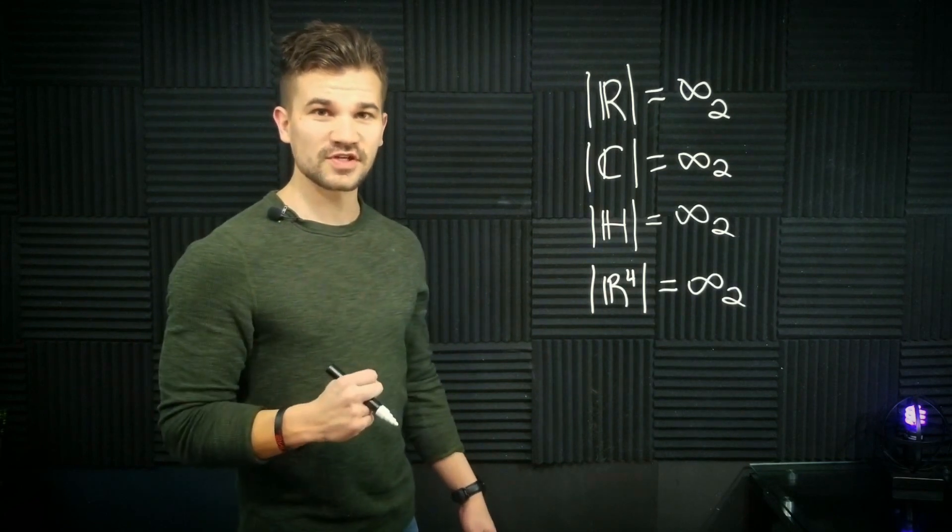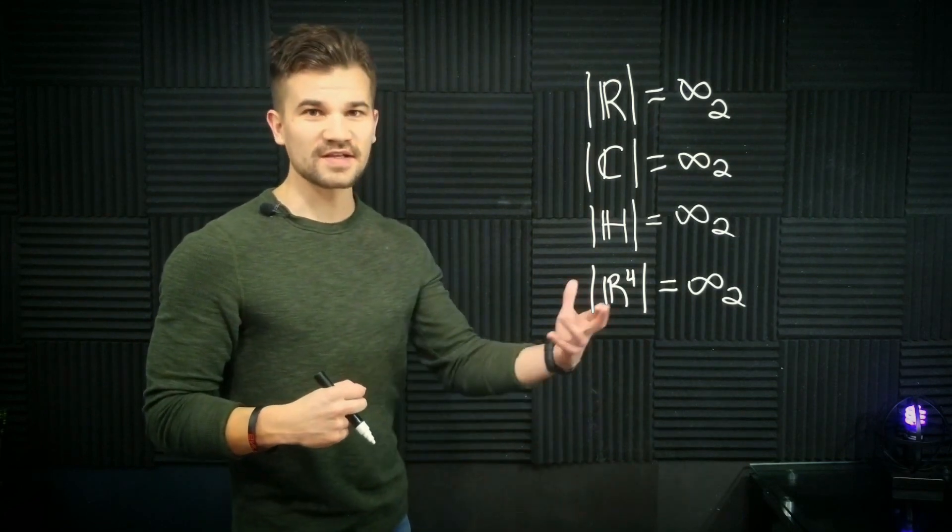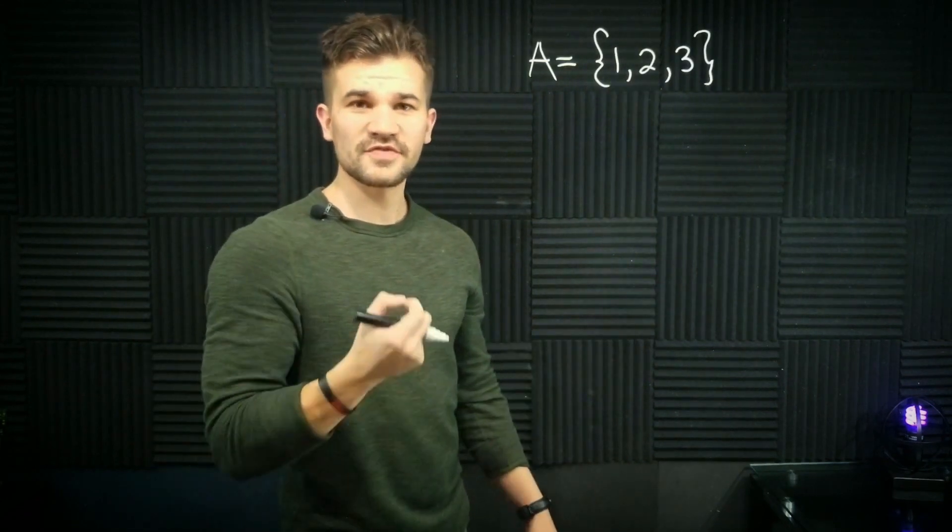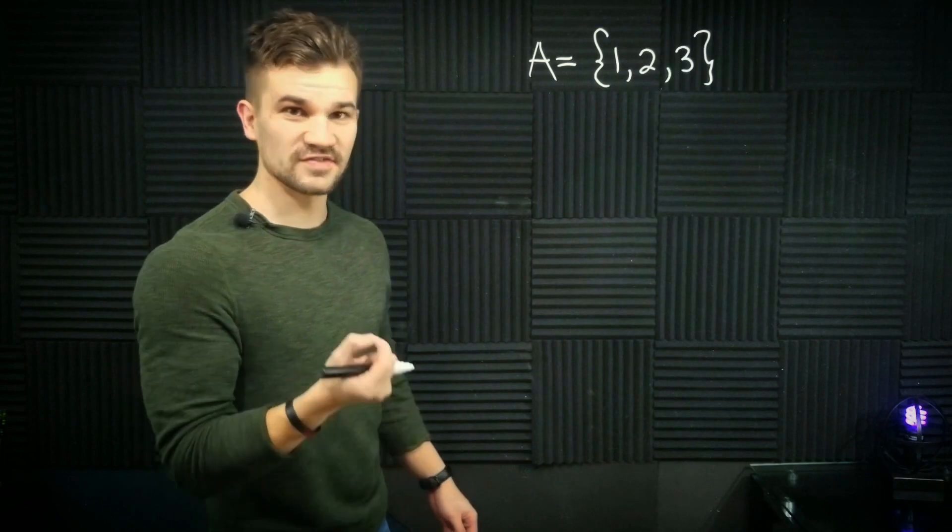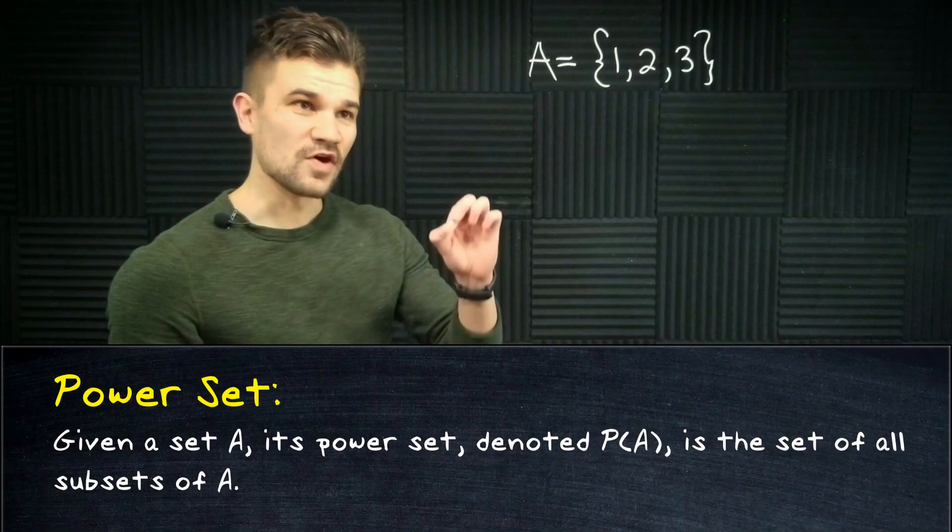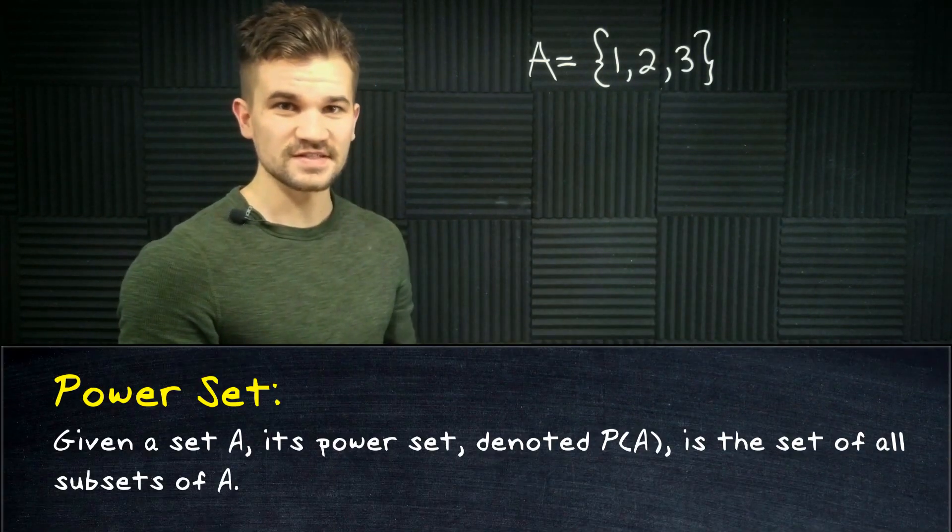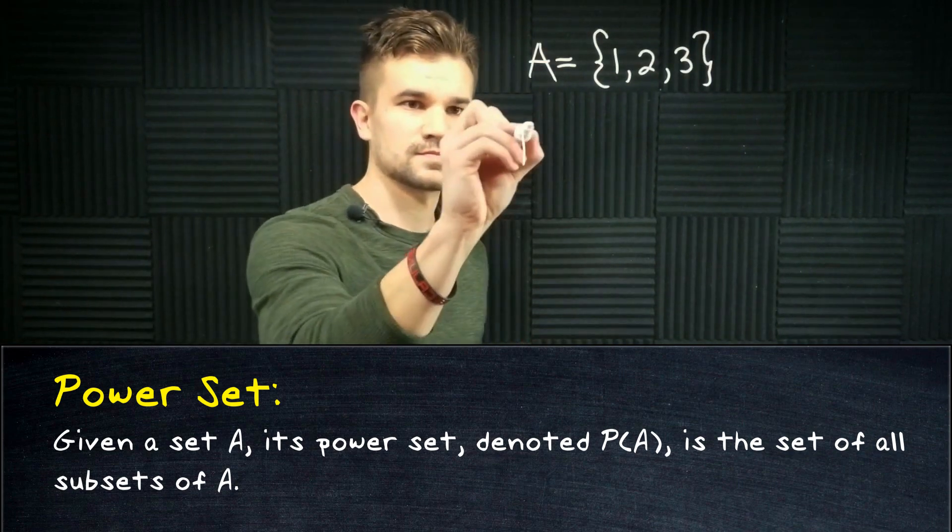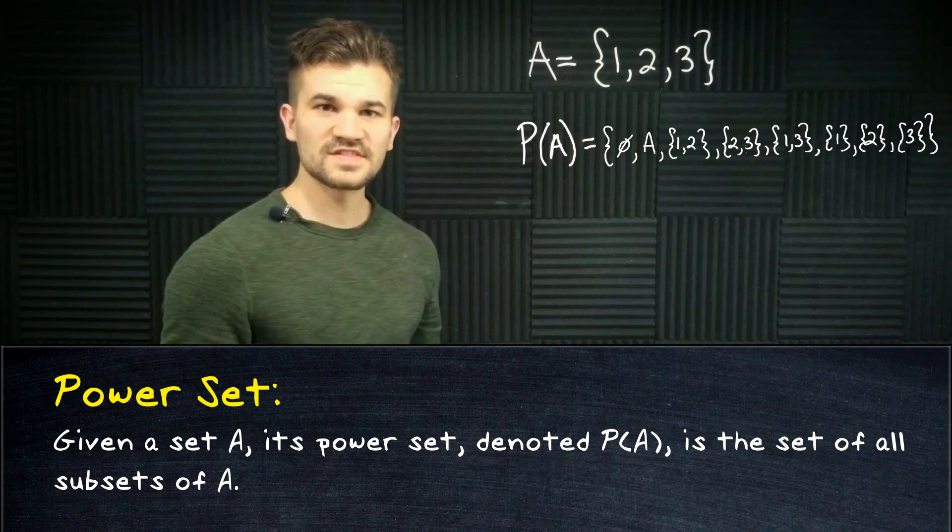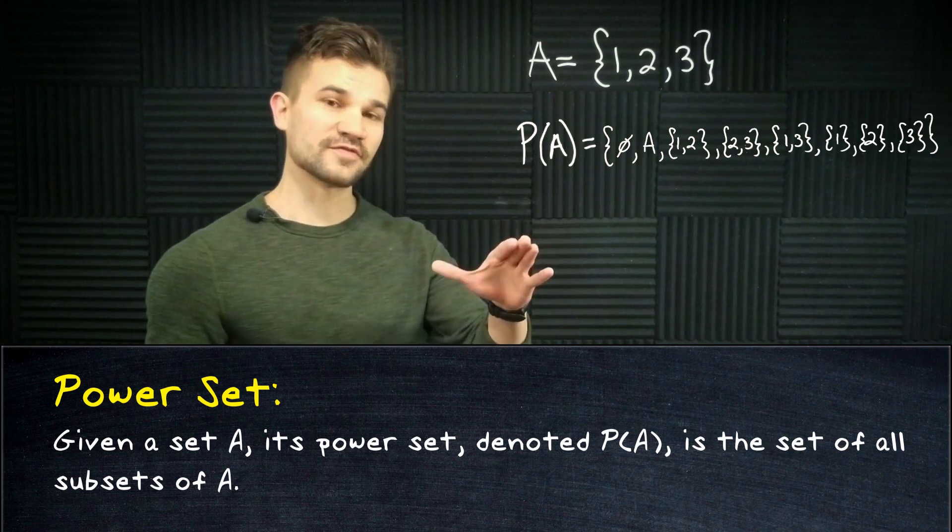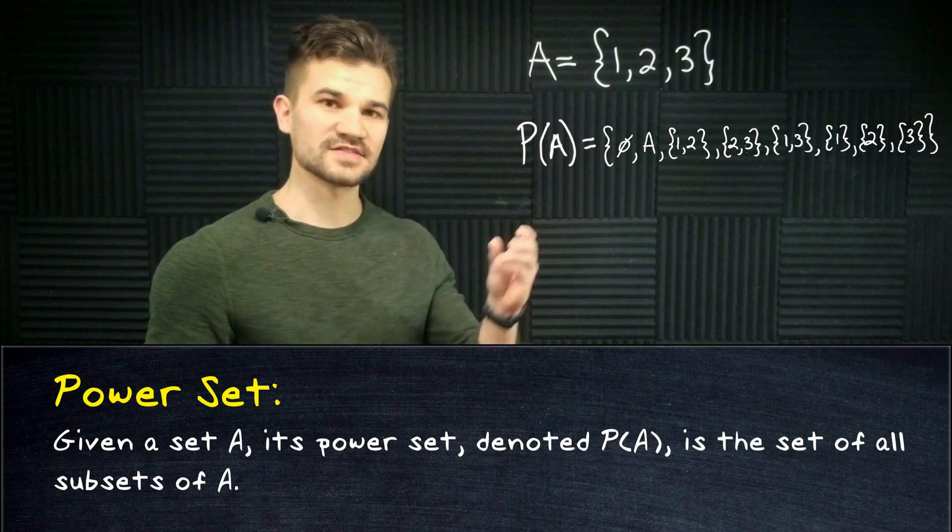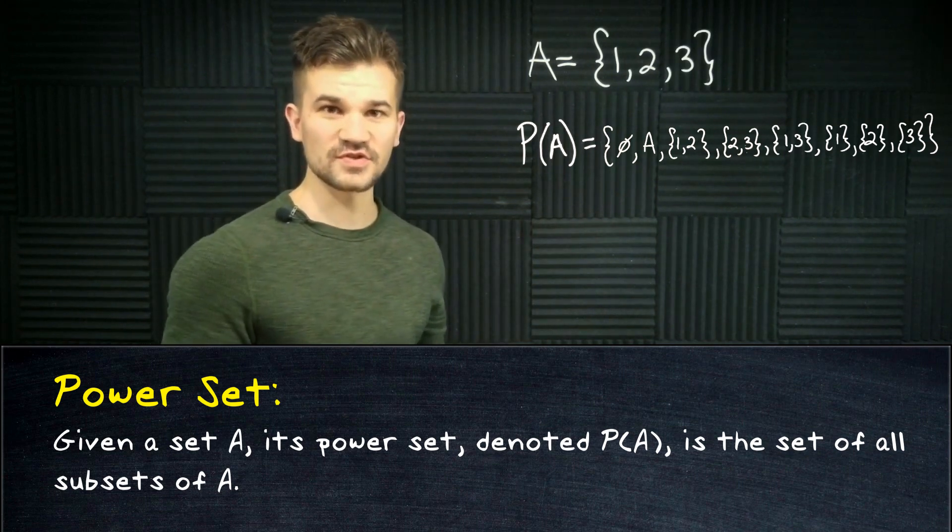First let's go back to our original example of a set. Here's our set A. We're going to define something called the power set. The power set of a set is the set of all of the subsets of that set. So the power set of A here would be this. This is called the power set because for a finite set the cardinality of the power set is always two to the n where n is the cardinality of the set you started with.